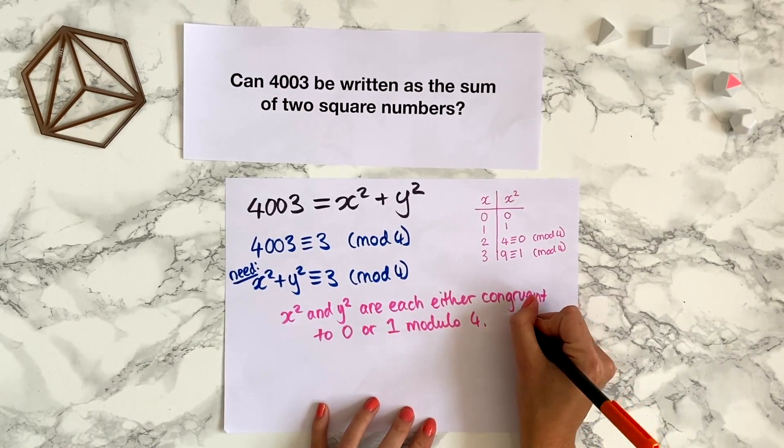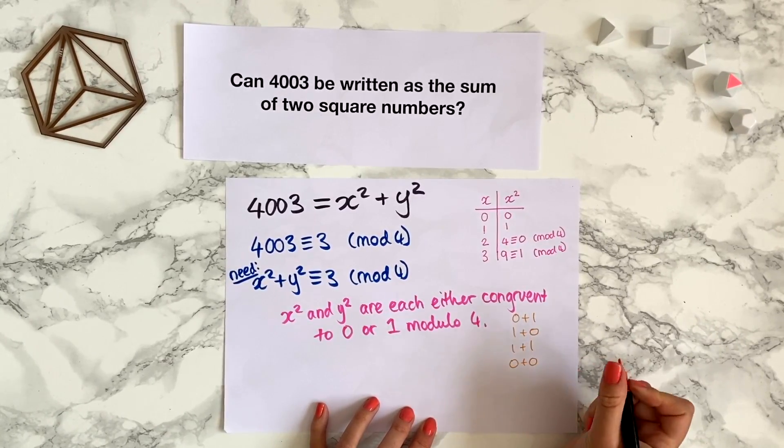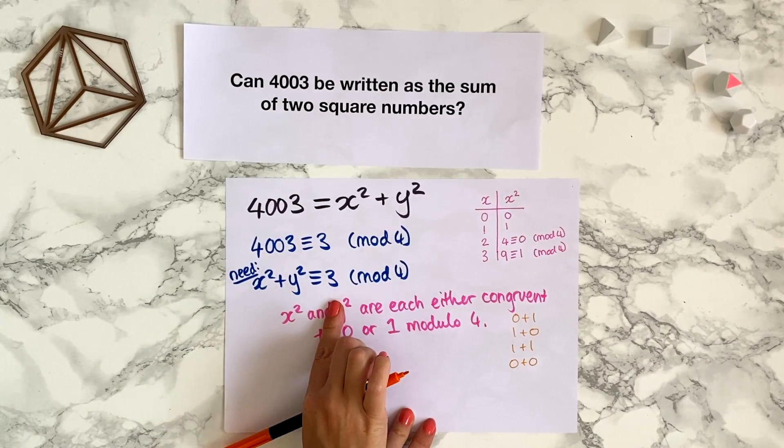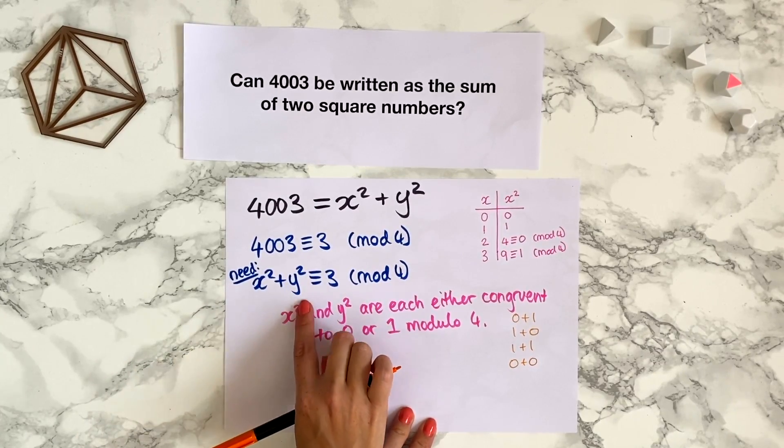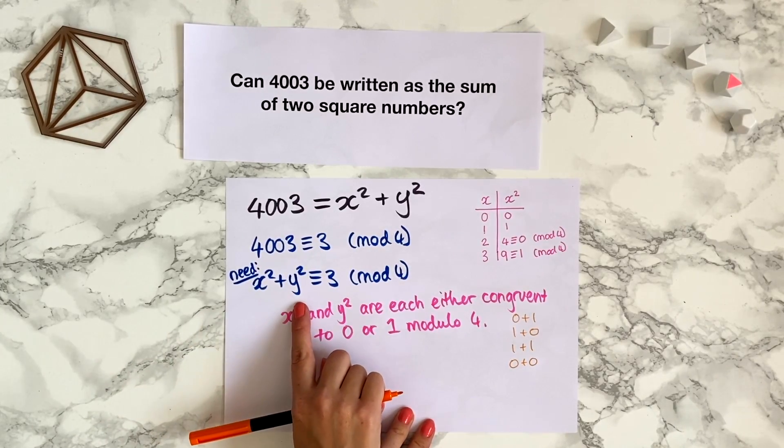For instance, 0 plus 1 or 1 plus 0 or 1 plus 1 or 0 plus 0, neither of these make 3. So it's impossible for x squared plus y squared to be congruent to 3 modulo 4 for any value of x and y.